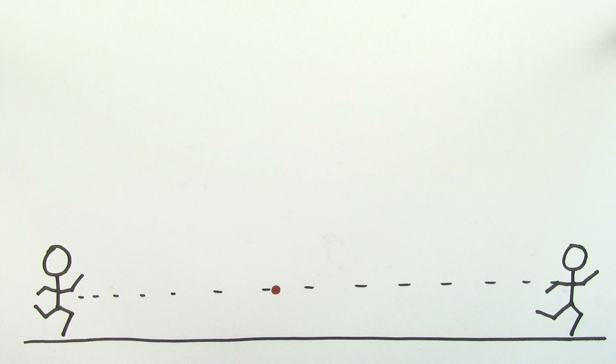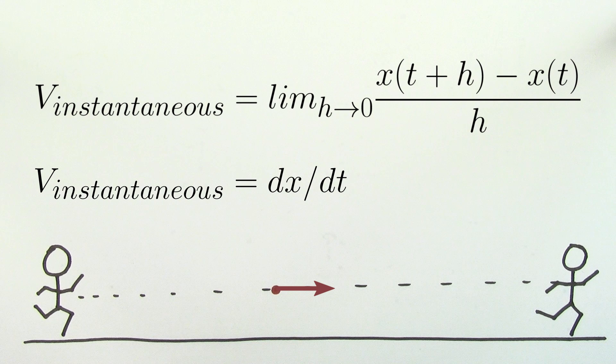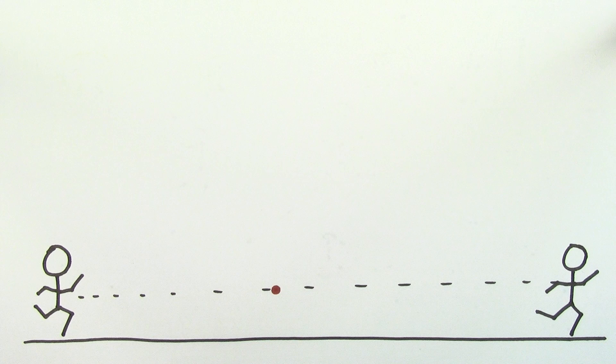So if you were to ask a physicist, what's the formula for the instantaneous velocity? He or she would probably give you a formula that involves calculus. But in case some of you haven't taken calculus yet, I'm going to show you a few ways to find the instantaneous velocity that don't require the use of calculus.